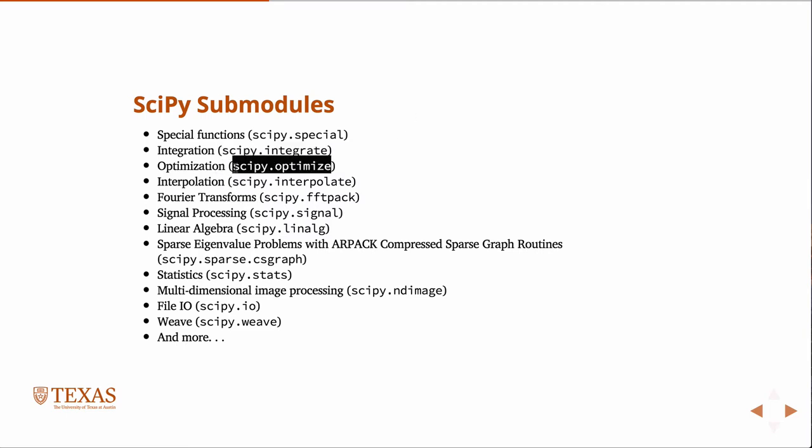SciPy optimize contains minimization routines, non-linear least squares, Levenberg-Marquardt algorithms, things like that. Interpolate is just what it sounds like, interpolating functions and other things. FFT pack for transforms. Signal processing is where you have your filtering routines, your discrete filters, Chebyshev filters, things like that.